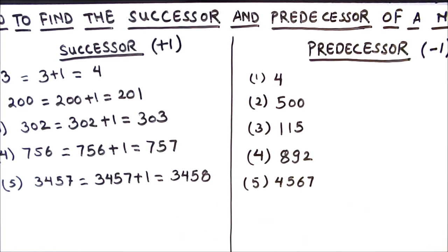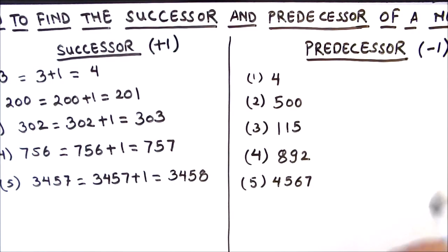And here we have 3457, and successor of this number is 3458. This is how you can find the successor of any number.